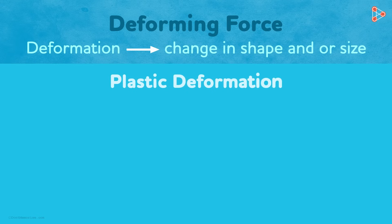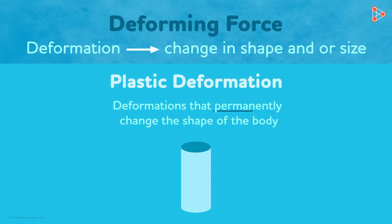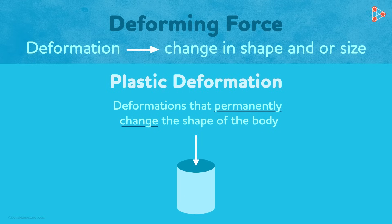Plastic deformations, on the other hand, are the deformations that permanently change the shape of the body. The applied force here is simply too much for the body to bear, and that results in permanent deformation.